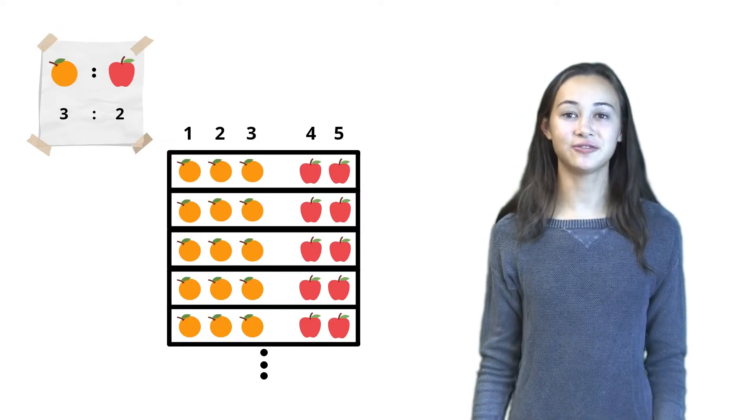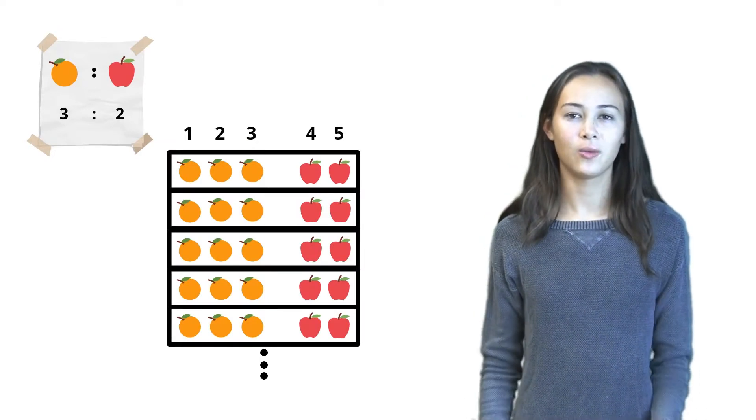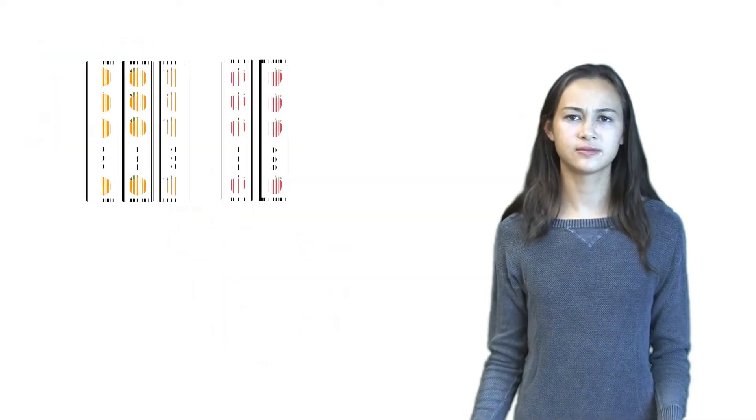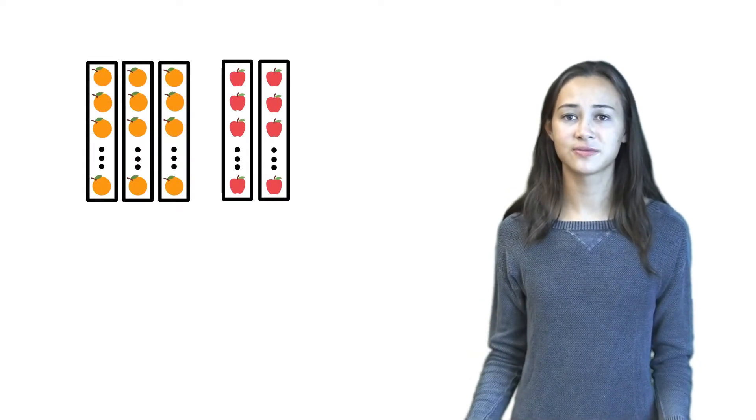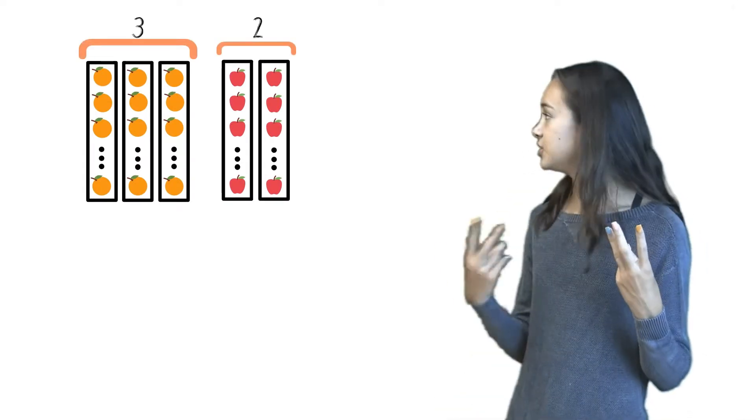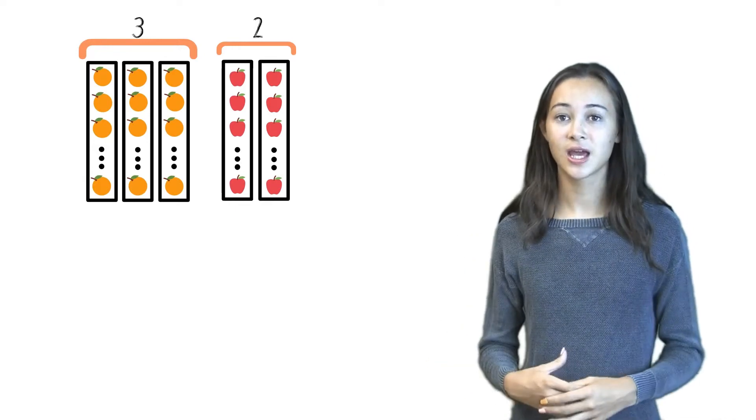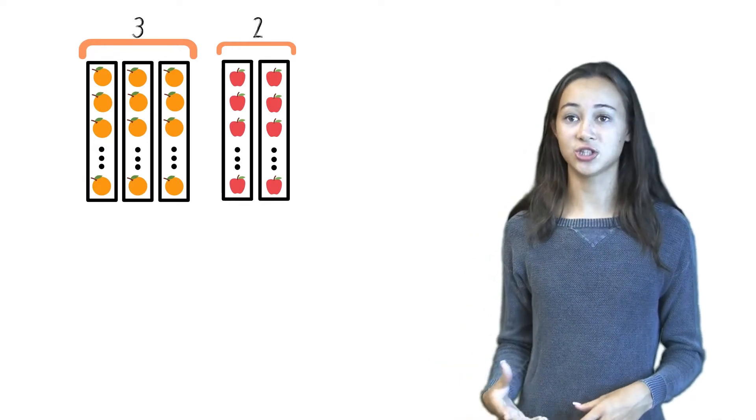Now let's try to look at the fruits in a different way. What if we grouped them vertically? We would have 5 groups, 3 groups of oranges and 2 groups of apples with the same number of fruit in each group.